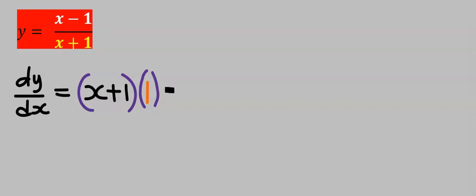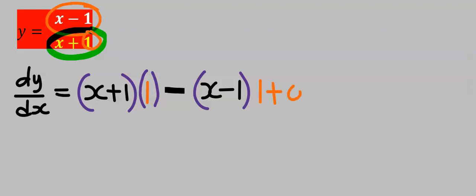I will put a minus. Next I will keep the numerator constant, which is X minus 1. Next I will differentiate the denominator, which is 1 plus... if I differentiate 1 it's 0, but if I differentiate X it's 1.